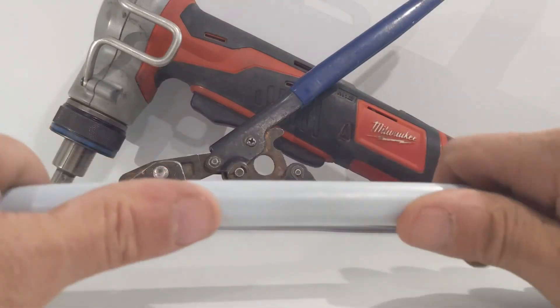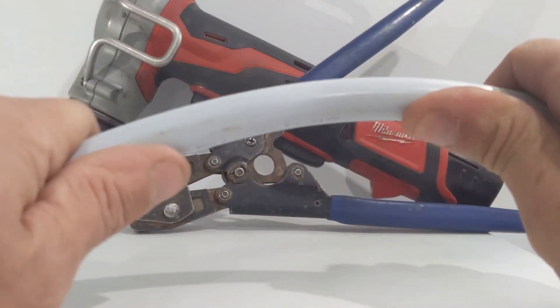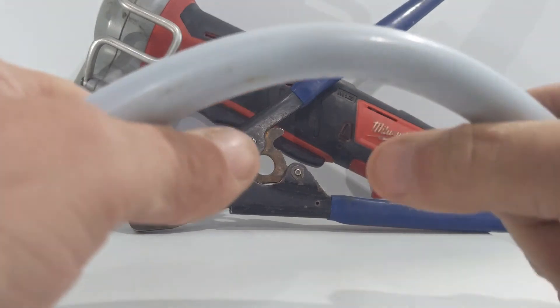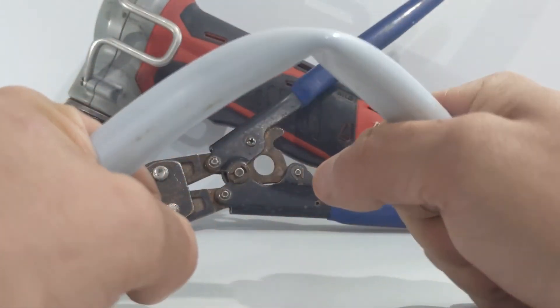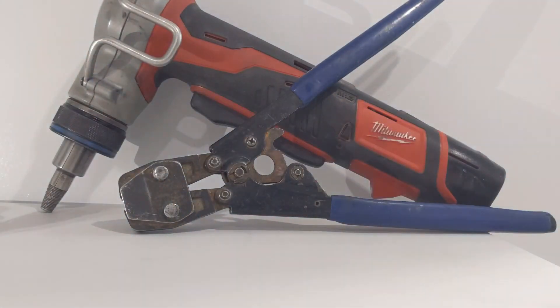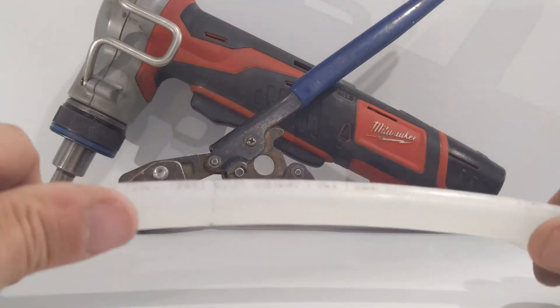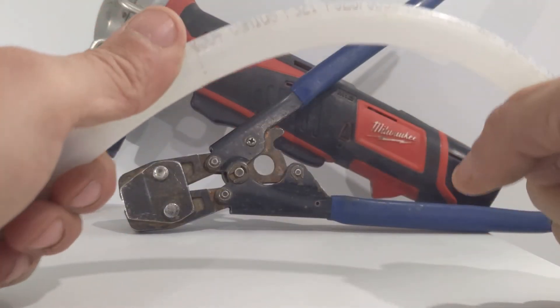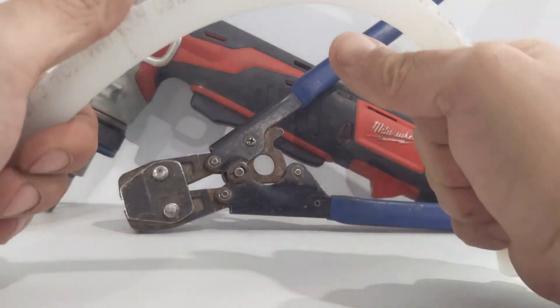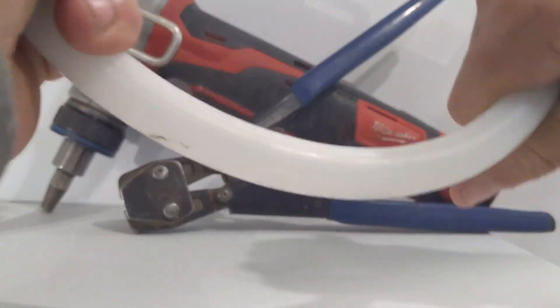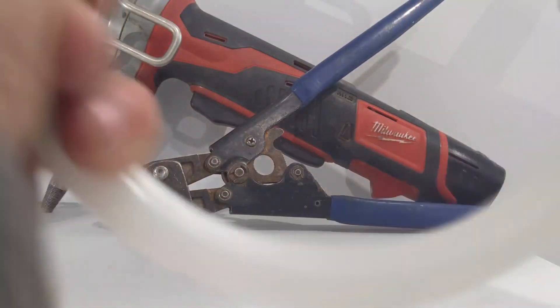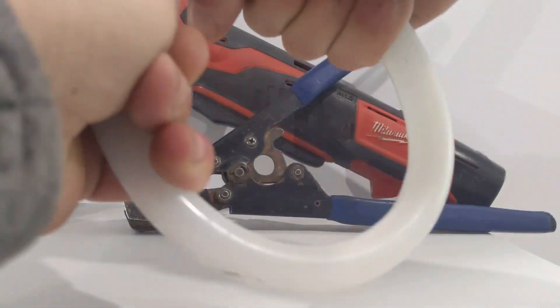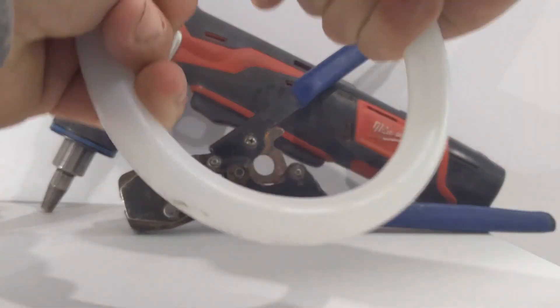The price difference between PEX-A pipe and PEX-B pipe again are significant. But you can see here, this is PEX-B pipe. I don't get a lot of room to really bend it. Now if I grab my PEX-A pipe, you can see I'm actually able to bend the pipe all the way around and have it touch itself without it kinking, as opposed to PEX-B.